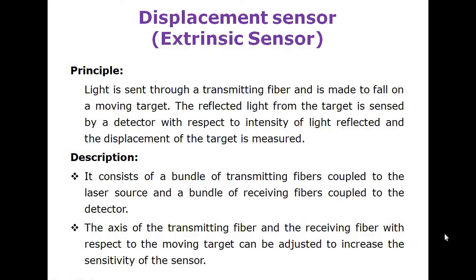Next topic is the displacement sensor. Displacement means how much distance can be traveled by any device or object. The principle is: it is also an extrinsic type of sensor, where you apply the signal in an external manner. The light source is sent through a transmitting fiber and is made to fall on the moving target.